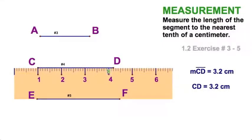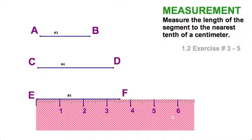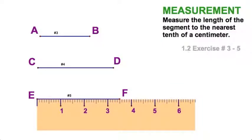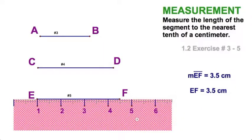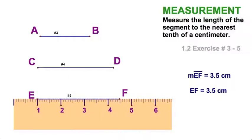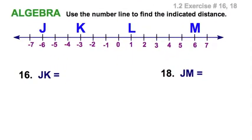So I could say 3.2 centimeters, or three and two-tenths. If I line it up from the one, I'm seeing four and two-tenths and subtract the one. One more — segment EF — and right away I can see it looks like three and a half. In decimal form we call that 3.5. If I measure from the one, I get four point five and subtract the one, and then you're done.